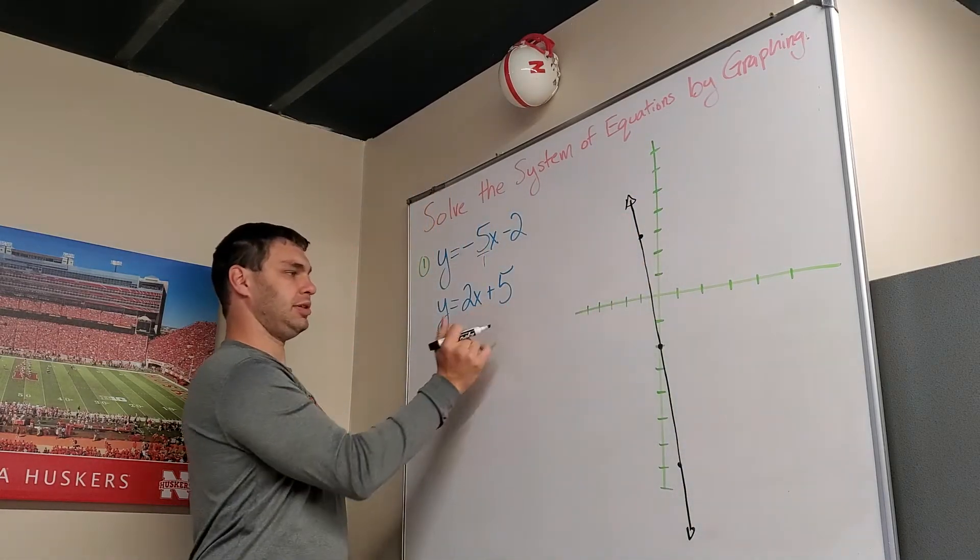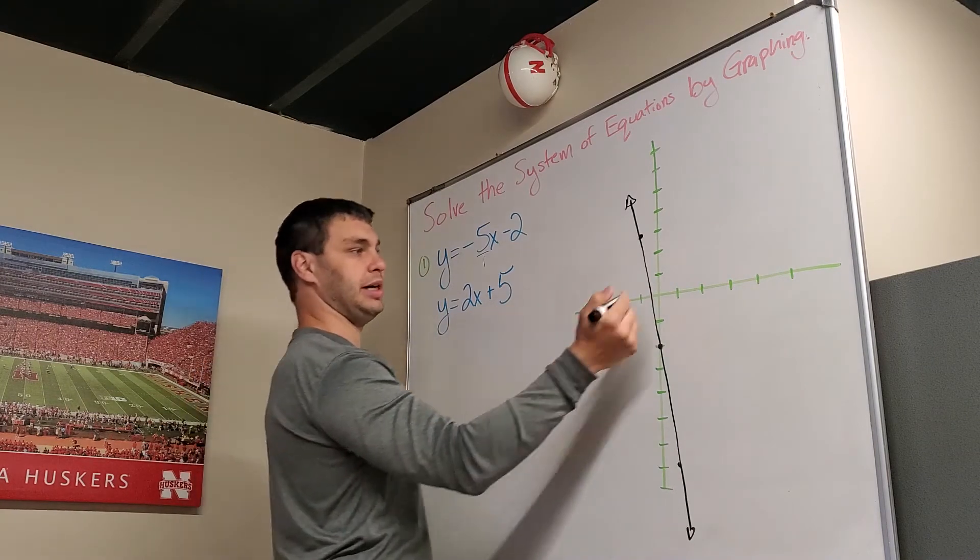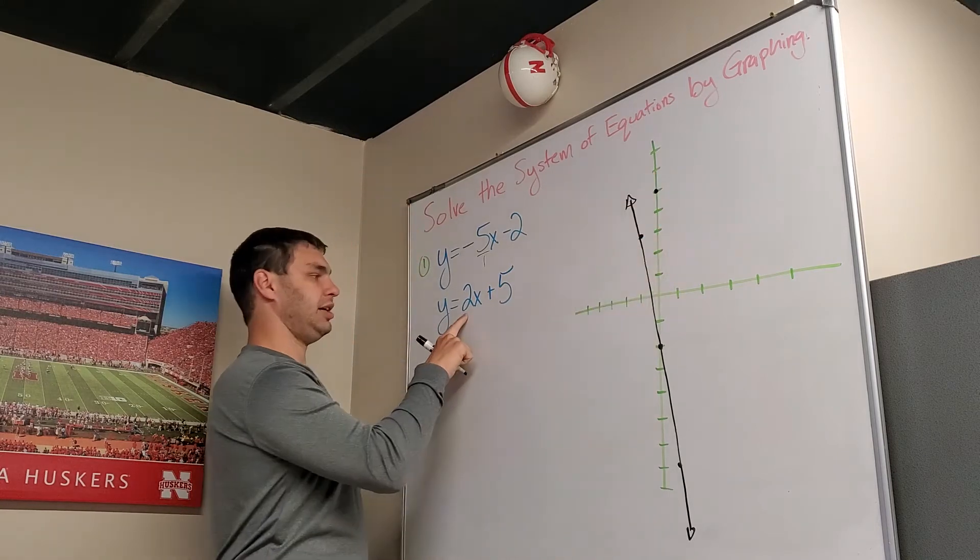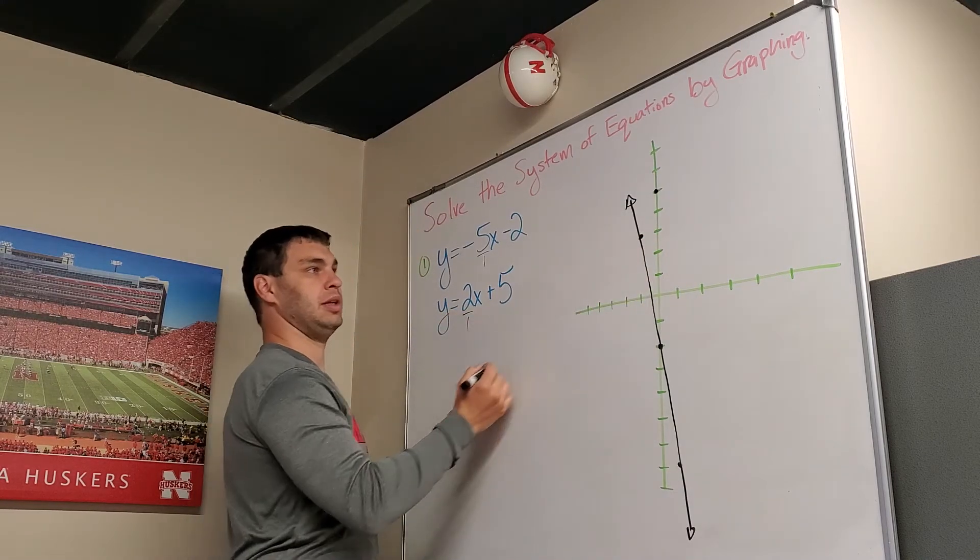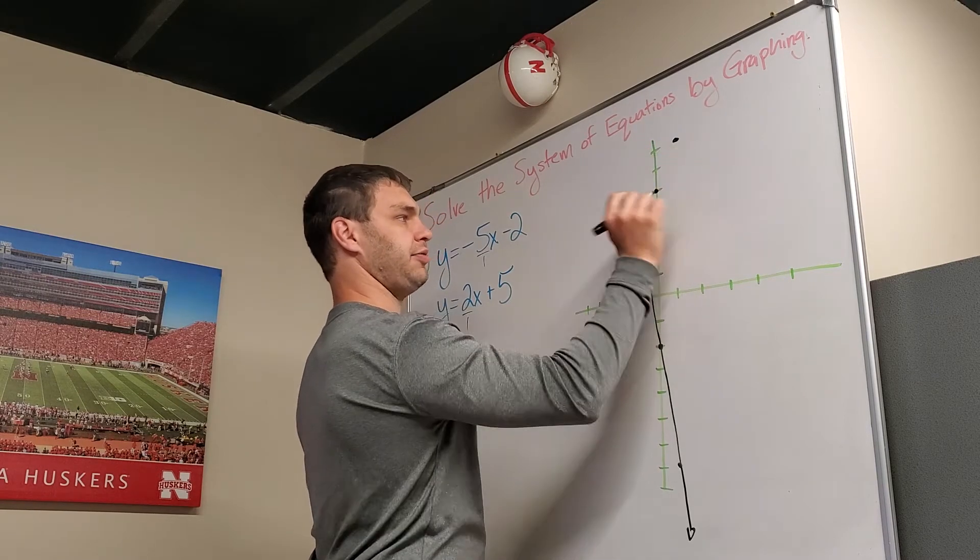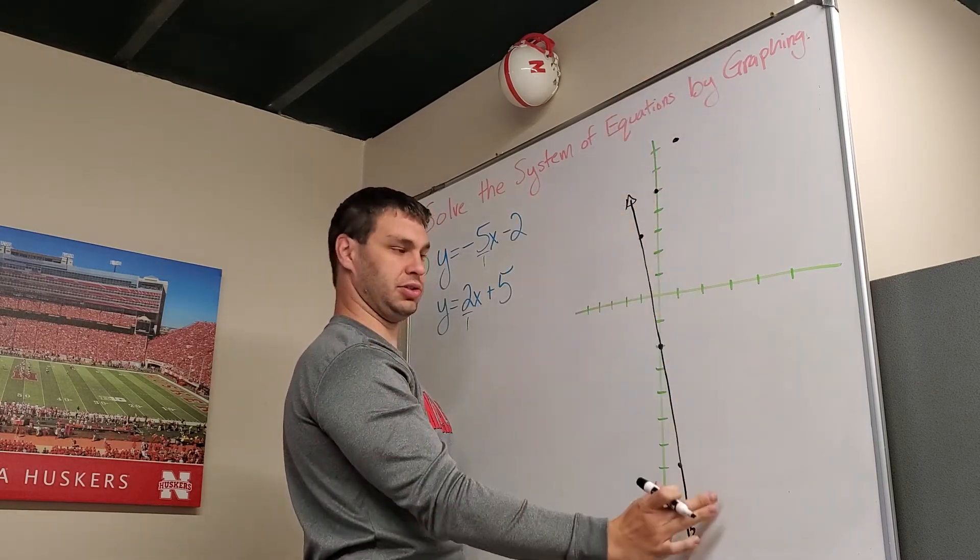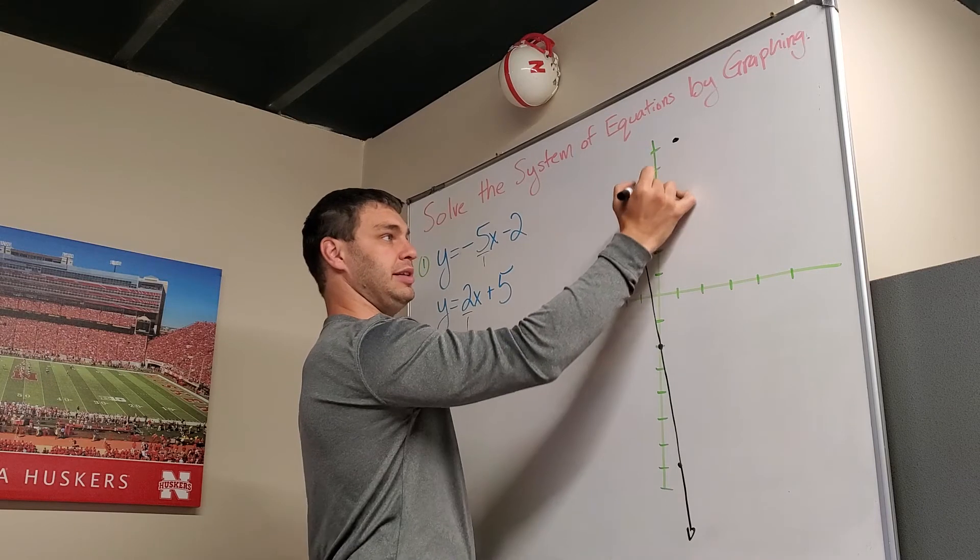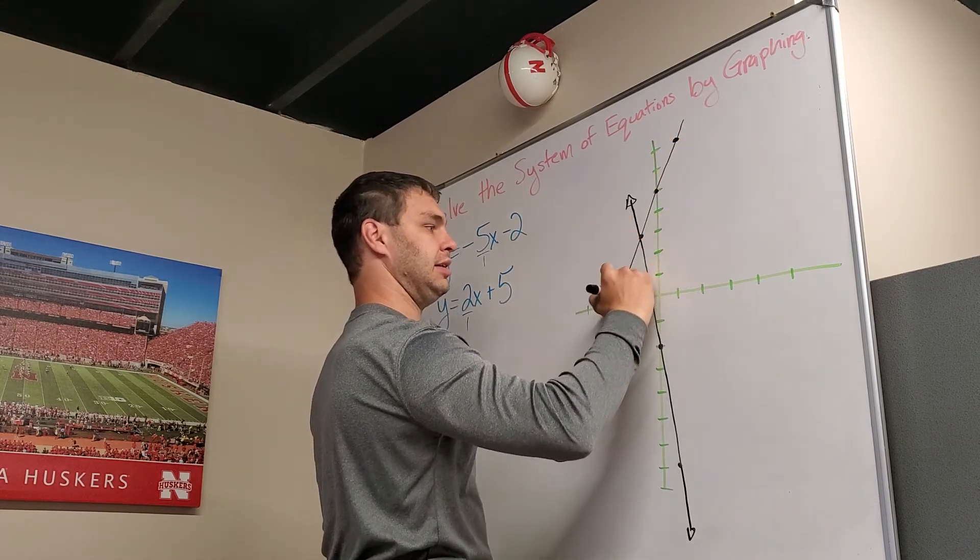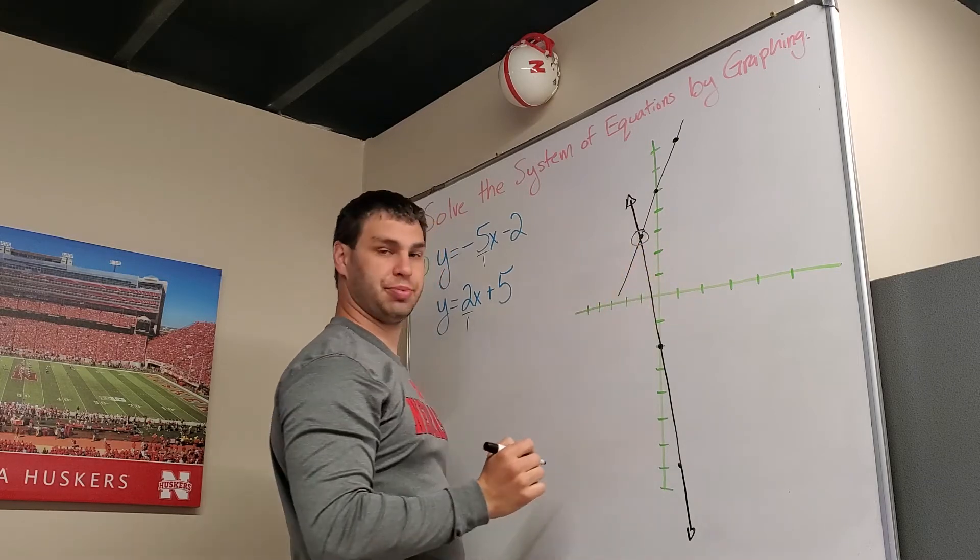The second one wants us to start at 5 on the y-axis. Positive 5: 1, 2, 3, 4, 5. And this one wants us to go up 2 and to the right 1. I'm going to go up 2 and to the right 1. Okay, notice if I keep going, though, I'm not getting any closer to this other line. So I'm going to go instead down 2 and back 1. And if I connect those dots, you can see I'm going to cross right here at this point.